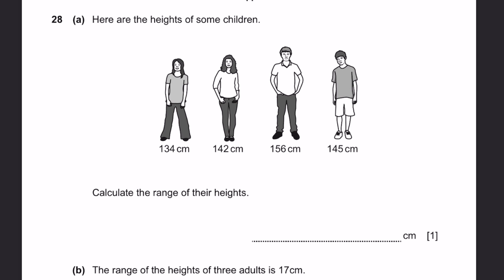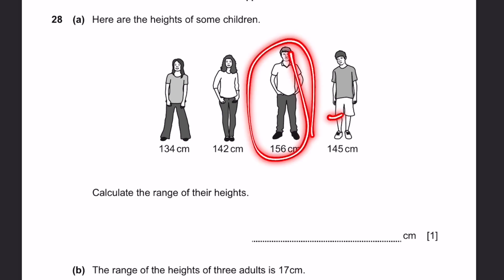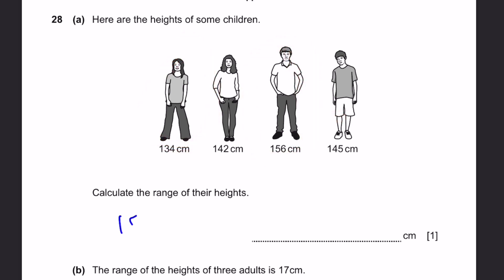Question 28A. Here are the heights of some children. Calculate the range of the heights. The tallest minus the shortest: 156 minus 134 equals 22 centimeters. That's the answer.